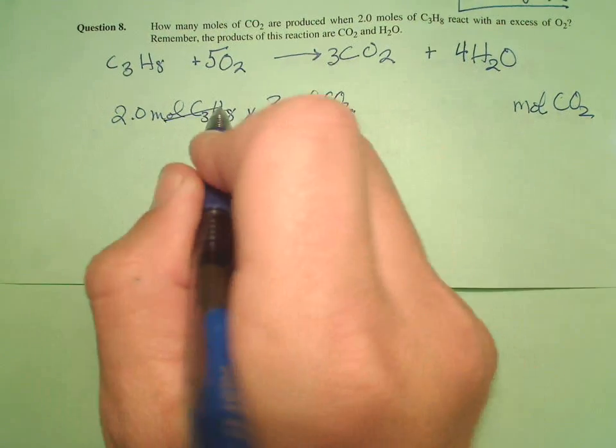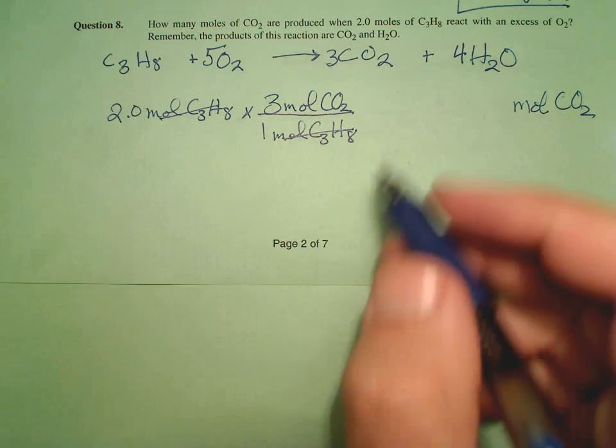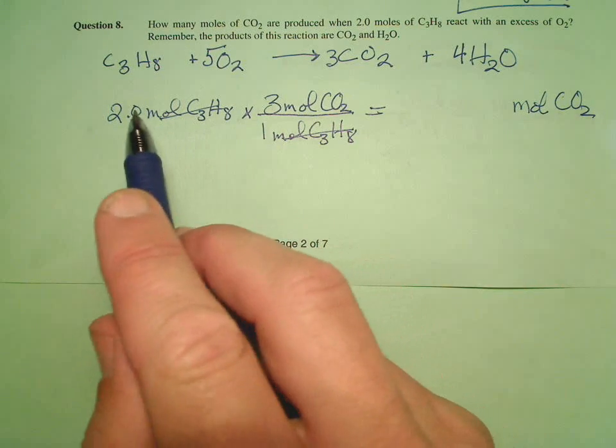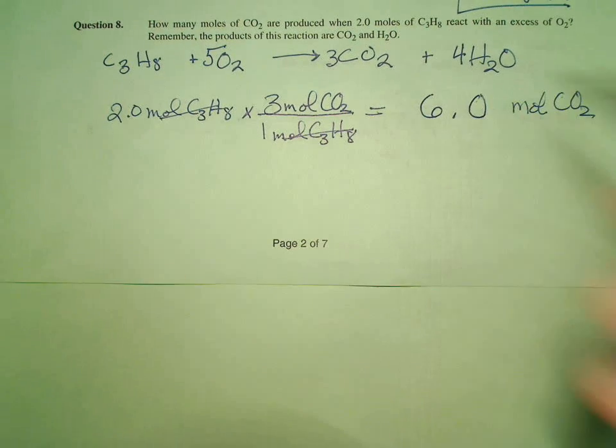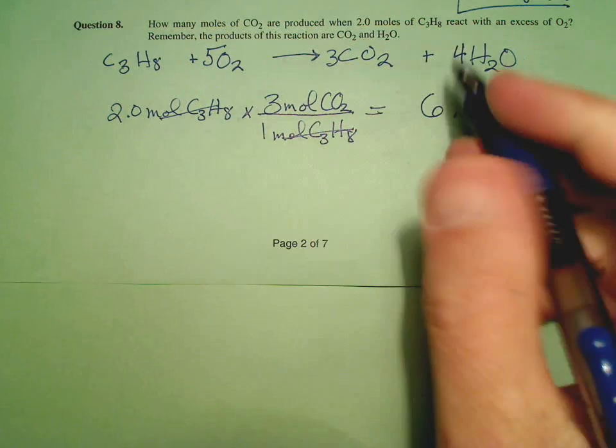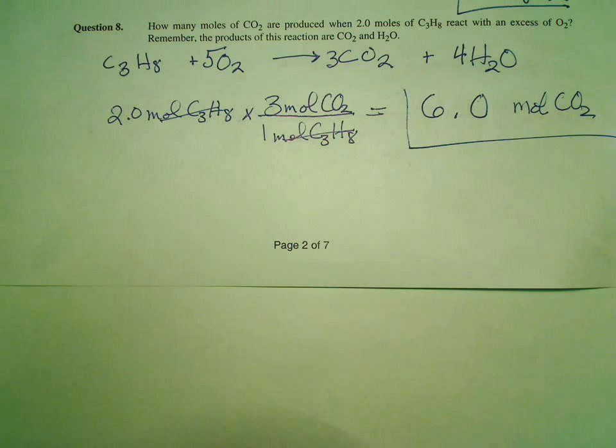Double-check my units: mole of CO2, mole of CO2. I can do this one without my calculator. I'm going to go to 2 sig figs. 2.0 times 3 is 6.0 moles of CO2. It's a quick one.